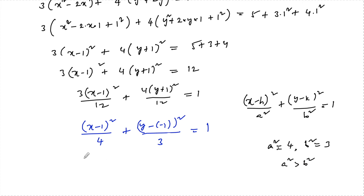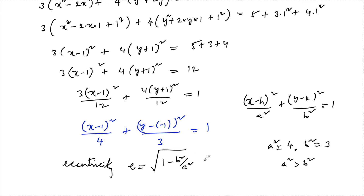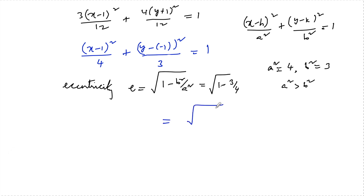The eccentricity e = √(1 - b²/a²) = √(1 - 3/4) = √(1/4) = 1/2. Since eccentricity is positive and must be less than 1, we take the positive root, giving e = 1/2.